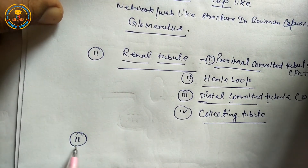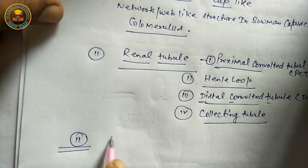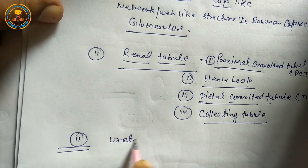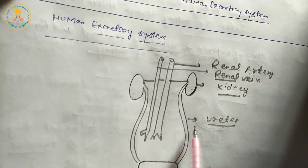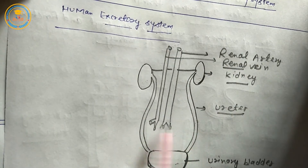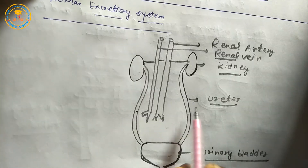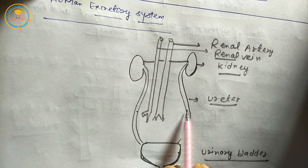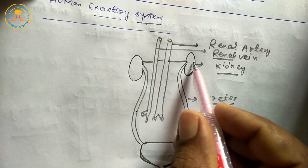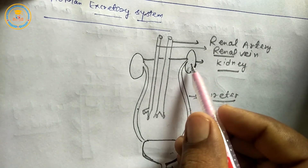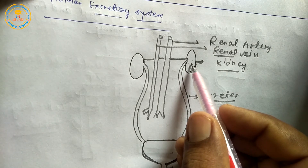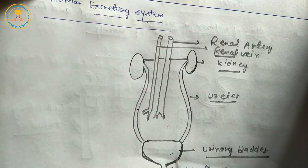Next is the ureter. Students, this is the ureter. Number: one pair. Shape: tube-like, meaning tubular. Location: between kidney and urinary bladder. Function: to receive urine and transfer it to the urinary bladder.